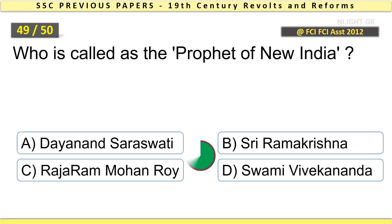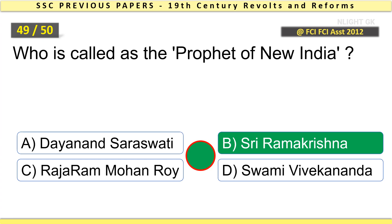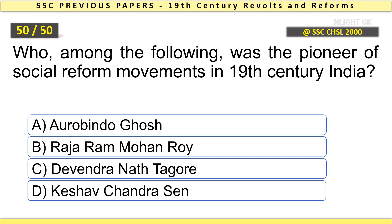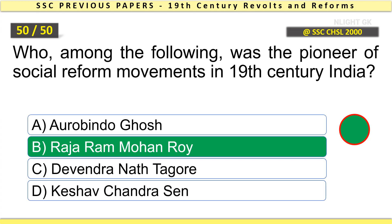Who is called the prophet of New India? Who among the following was the pioneer of social reform movements in 19th century India? Raja Ram Mohan Roy.